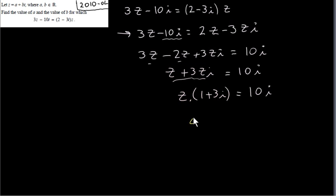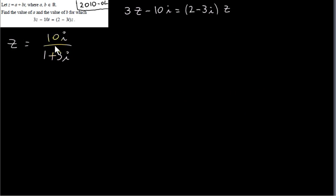The final step is to divide both sides by 1 plus 3i, since z is multiplied by 1 plus 3i. That gives z equals 10i divided by 1 plus 3i. Now z is given as a plus bi, some complex number, but here we have two complex numbers: 10i divided by 1 plus 3i. So we use the method from an earlier video to write this as a single complex number.